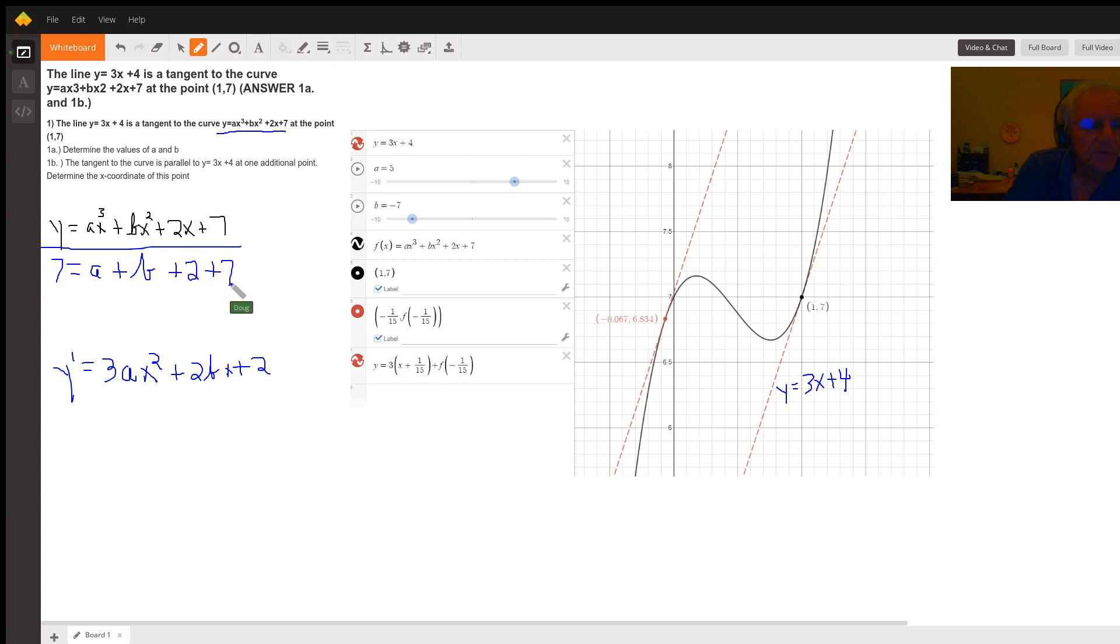So if I put a 1 in for x, I get a 7 for y. And I can simplify this to say a plus b equals minus 2, 7 minus 9.